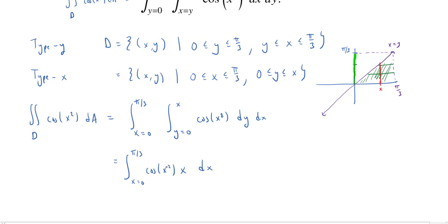Because now, whereas cosine of x squared has no elementary antiderivative, cosine of x squared times x, that I can do with a pretty reasonable substitution. Let me see. How about I let u equal x squared? So that du is equal to 2x dx.